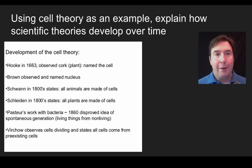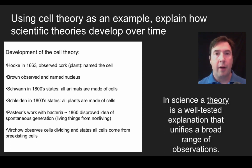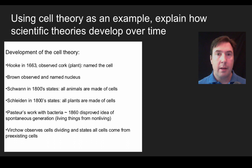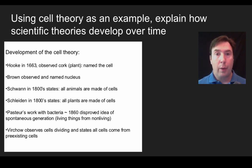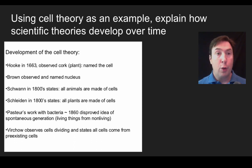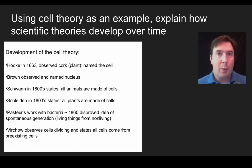Our last topic is how cell theory is an example of how scientific theories develop over time. A theory is a model that unifies a broad collection of observations. Modern cell theory states: all living things are composed of cells; cells are the basic structural and functional units of all living things; and all cells come from pre-existing cells, meaning cells are the fundamental unit of reproduction. Looking at the history of observations on the left: Hooke first named cells in the 1600s; the nucleus was observed; Schwann and Schleiden established that all animals and then all plants are composed of cells — and in the 1800s, plants and animals were the only living things we knew.